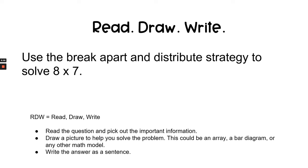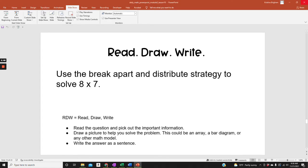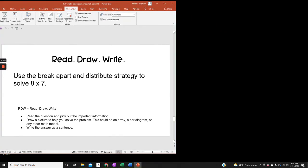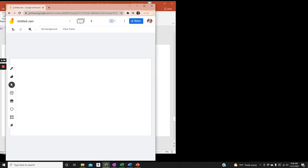Now it's time for us to put that to the test using the read-draw-write strategy. So I'll read first. It says, use the break apart and distribute strategy to solve 8 times 7. So I want to think about how I can break apart 8 times 7 to make it easier to solve. And I know that my objective is actually to use a 5 plus n strategy. So let's try using a 5 fact to solve. And I'm just opening my Google Jamboard.